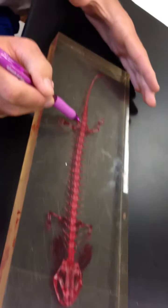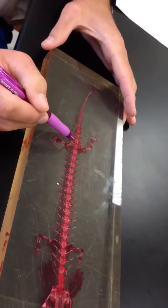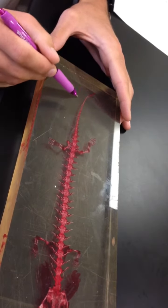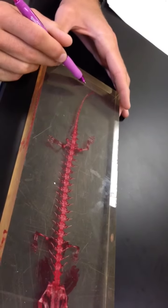At the pelvic girdle is the sacral vertebra, of which there is only one, and then the caudal vertebrae continue all the way down to the caudal fin.